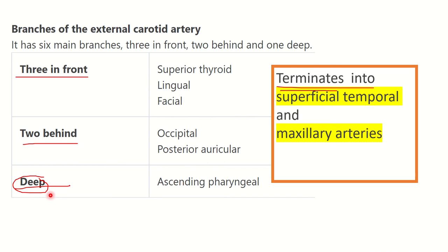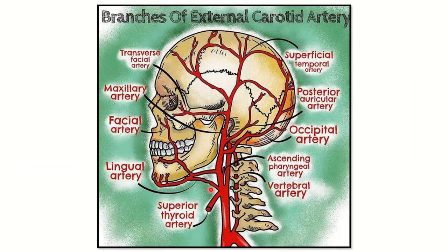The deep or medial branch is the ascending pharyngeal artery, because the external carotid artery passes on the lateral side of the neck, but the pharynx lies more medially. So the ascending pharyngeal artery arises medially and supplies the pharynx. It ascends upward to the pharynx, which lies in the midline, while the external carotid artery lies close to the sides of the vertebra.